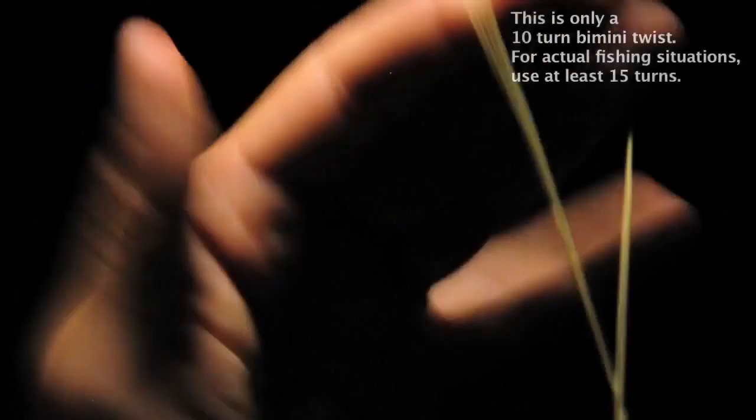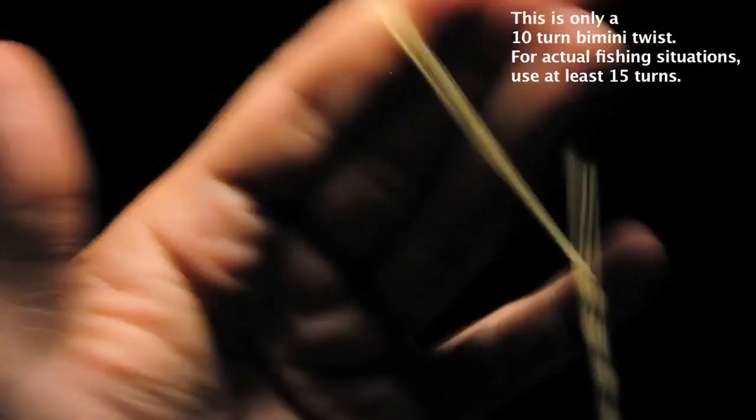To tie the bimini, double your line on itself and begin twisting it. You want at least 15 to 20 wraps.